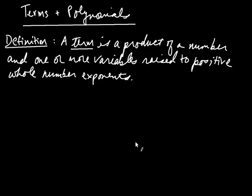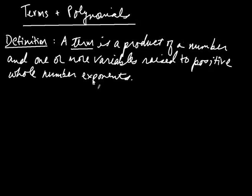We need to introduce a little bit of mathematical terminology. We're going to talk about terms and polynomials. A term is a product — you're multiplying a couple things together. Specifically, a number and one or more variables raised to positive whole number exponents. So basically a number multiplied by a variable with positive whole number exponents.